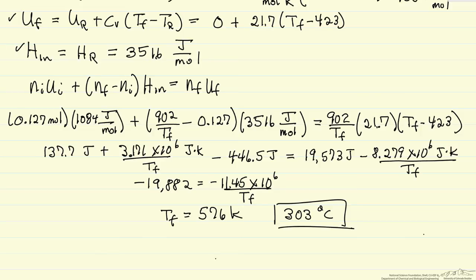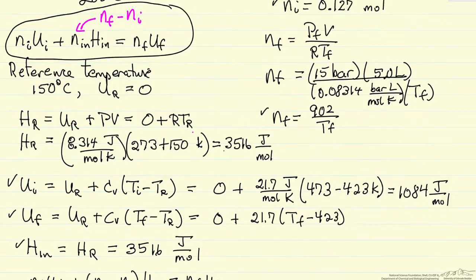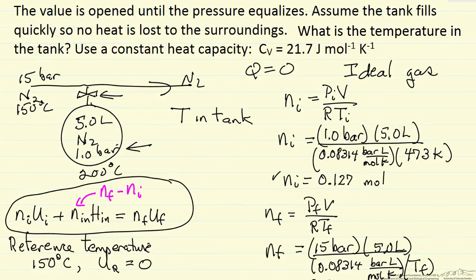I've calculated the final temperature: 303°C. Let's go back and look at the initial problem. Tank starts at 200°C and we're adding nitrogen flow at 150°C, and yet the final temperature is 300°C. With two significant figures, it's 300°C.